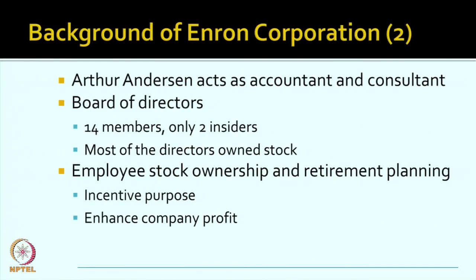Enron was a professionally managed company — no shareholder had more than 20-21% stake. Major shareholders were various institutions, corporations, banks, charities, and small investors. It was based in Houston, mainly into energy trading and distribution, and was very famous for advocacy of energy deregulation. Their auditors were Arthur Anderson, who also served as consultants. The board had 14 members of which only 2 were insiders as executive directors. Most directors also held stock in the company and were given large stock options at retirement. On paper it was a very strong and solid arrangement.